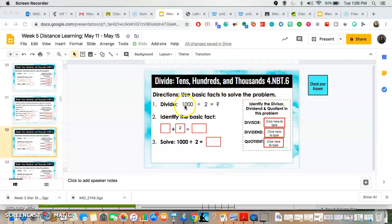So our problem is 1,000 divided by 2. The first step is to identify the basic fact, and once again the basic facts are the numbers that we are able to divide easily.